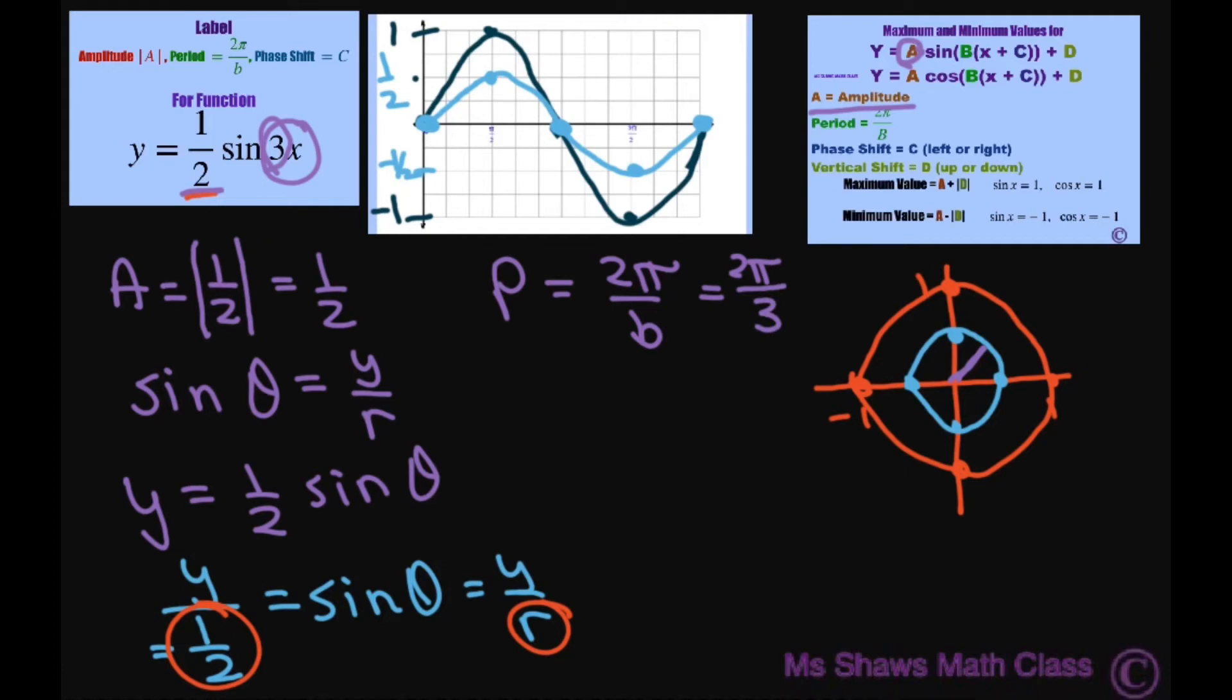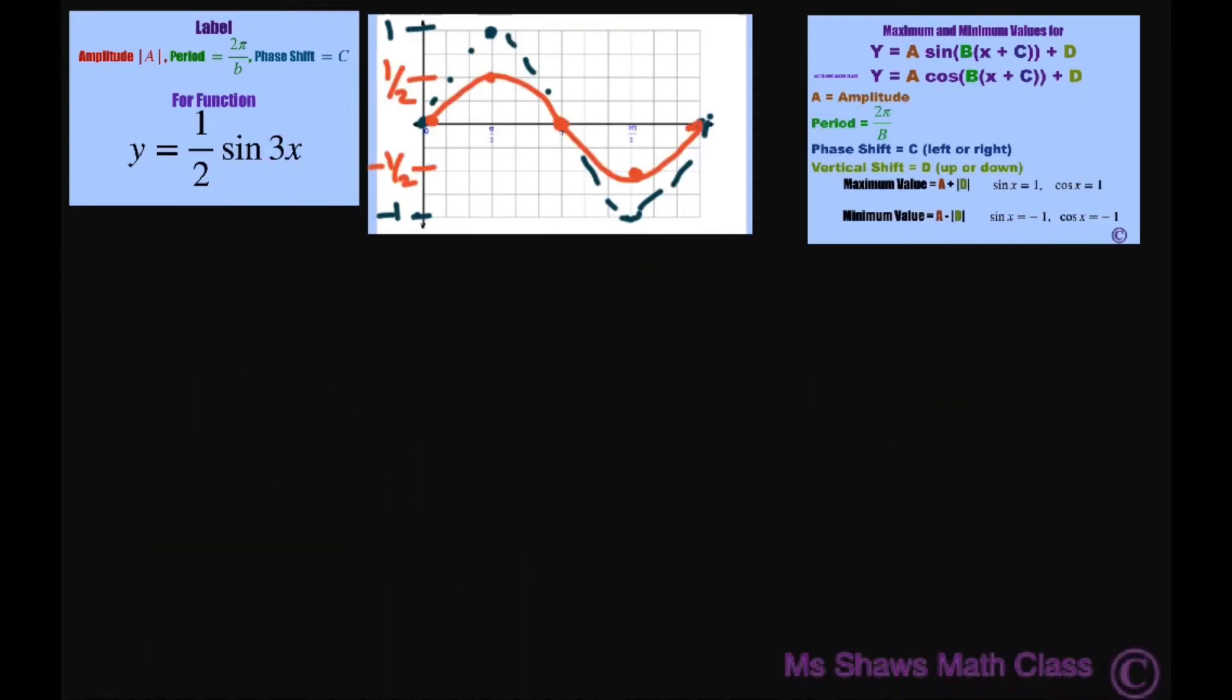That just means that, let's look at that. For the period, that means we make a complete wave at 2 pi divided by 3. So 2 pi divided by 3 is going to be, let's see, right about here. Let's just make it here for now. So basically that means it makes a complete wave.